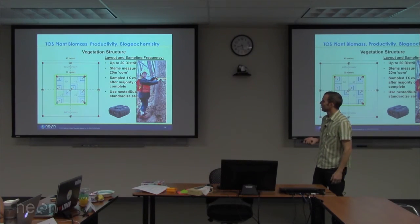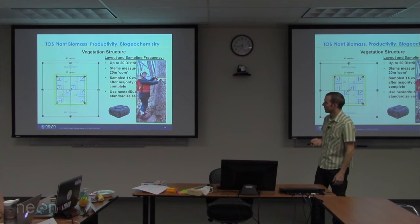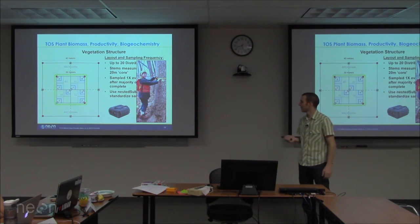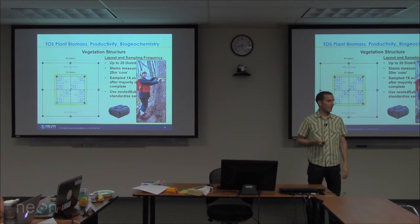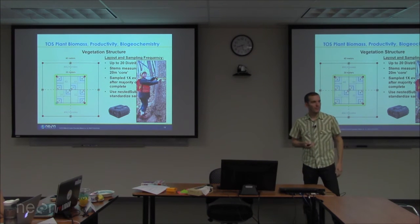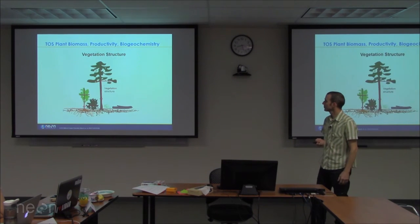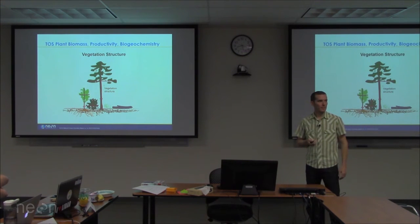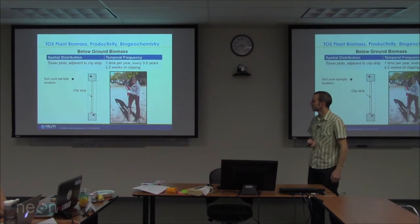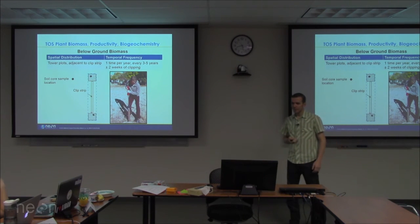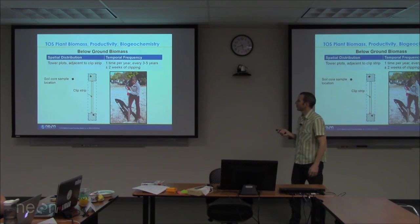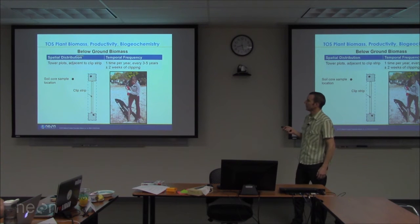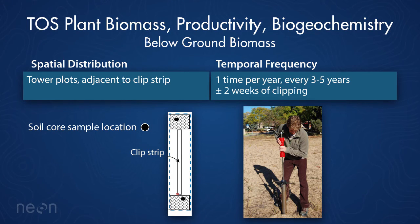The methods used include standard DBH tapes and laser range finders to measure heights and canopy diameters of individuals — summarizing what we get from woody vegetation at the site. Below-ground biomass is also measured, but only in tower plots, so it's probably less relevant for most users, though I wanted to give the complete picture.